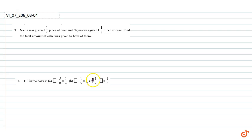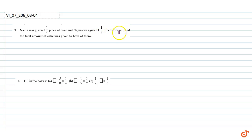In this video we are going to solve question number three and four. Question number three: Naina was given one and a half piece of cake and Najma was given one and one by third piece of cake. Find the total amount of cake that was given to both of them.